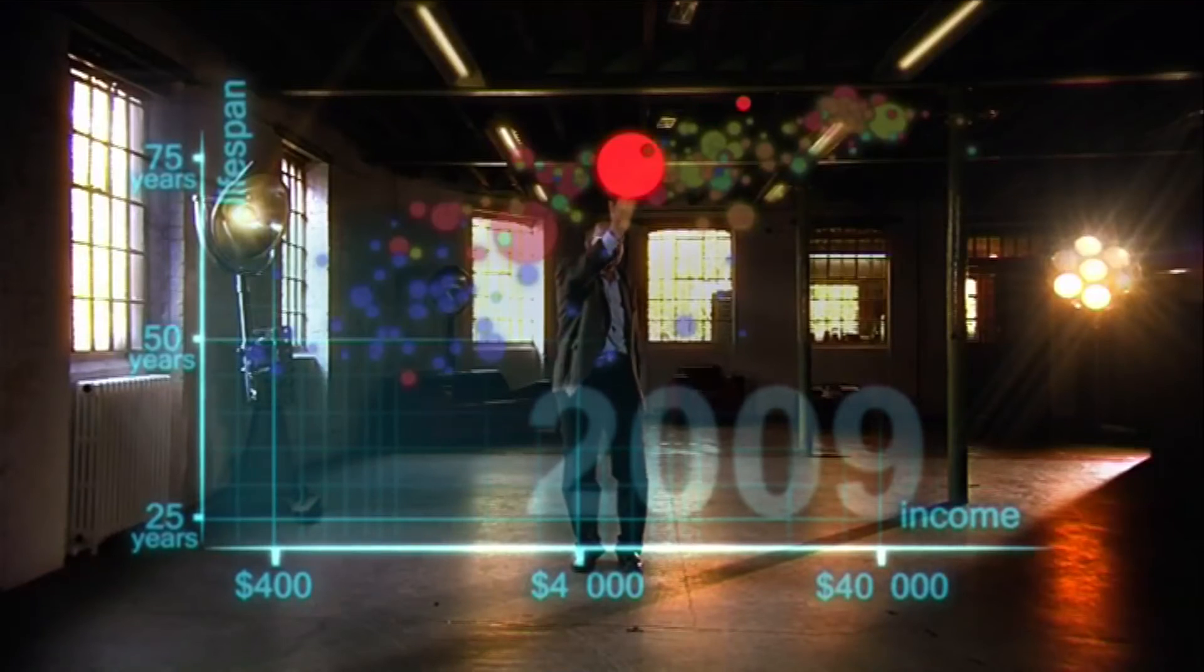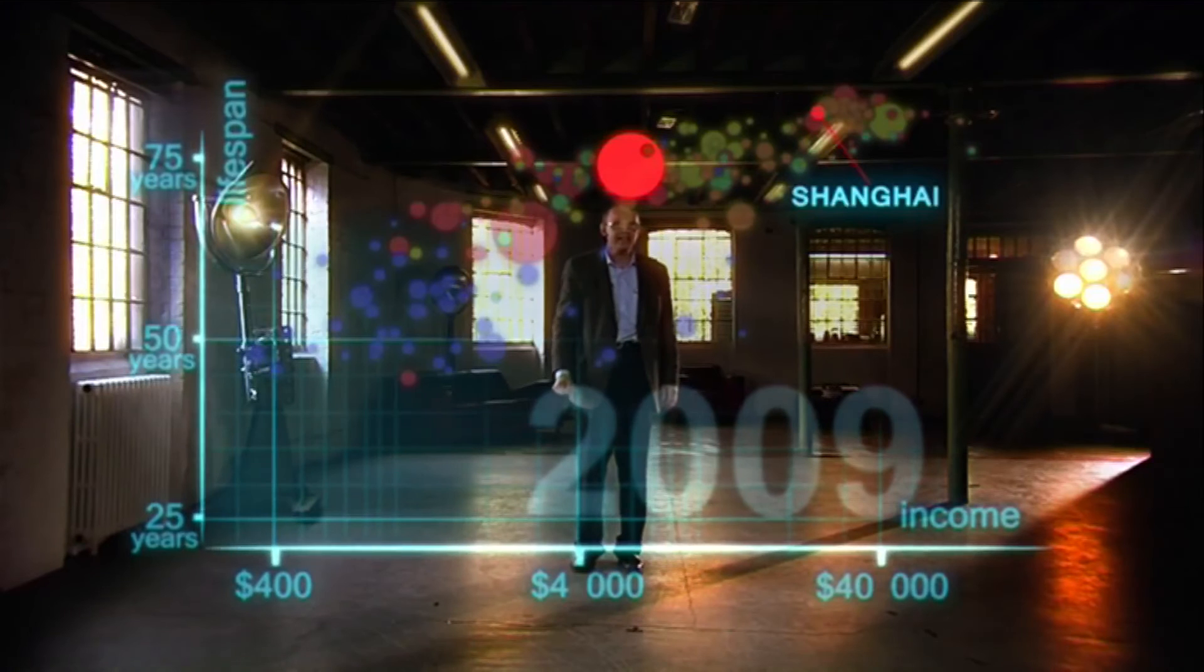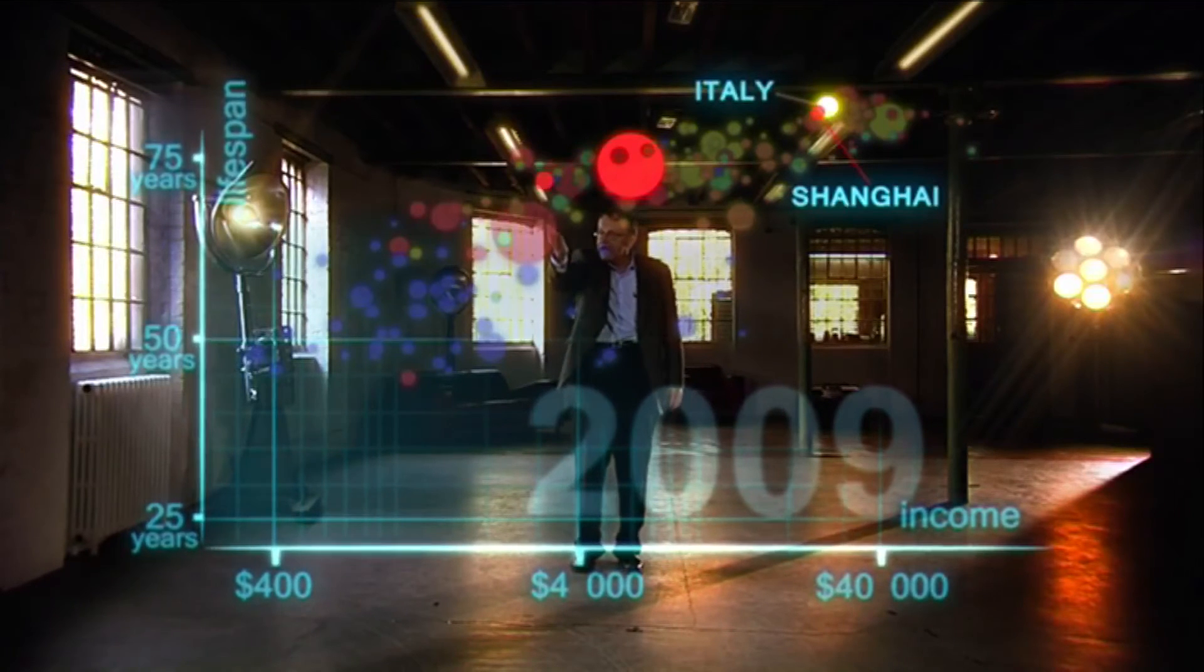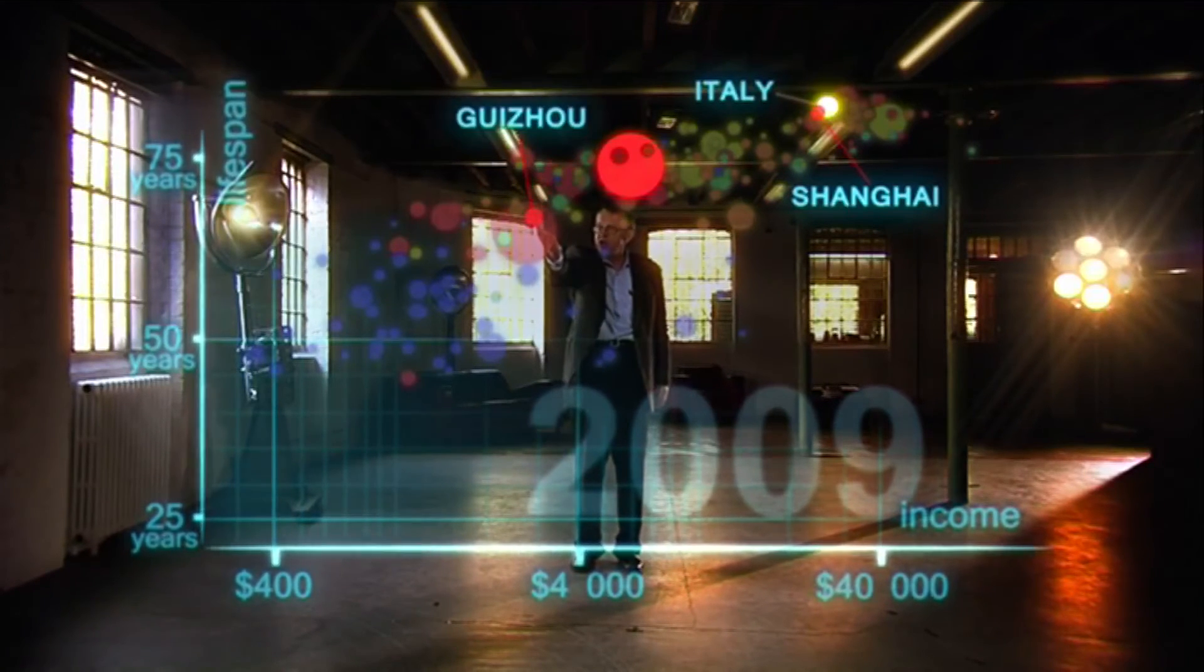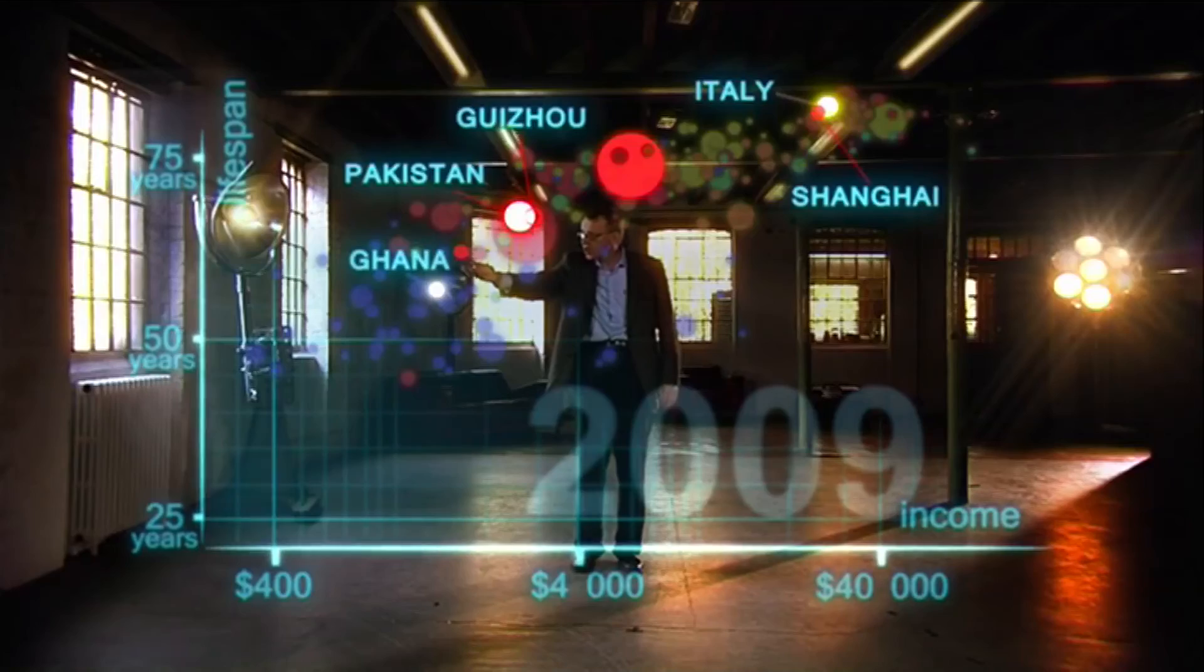But I can split them. Take China. I can split it into provinces. There goes Shanghai. It has the same wealth and health as Italy today. And there is the poor inland province Guizhou. It is like Pakistan. And if I split it further, the rural parts are like Ghana in Africa.